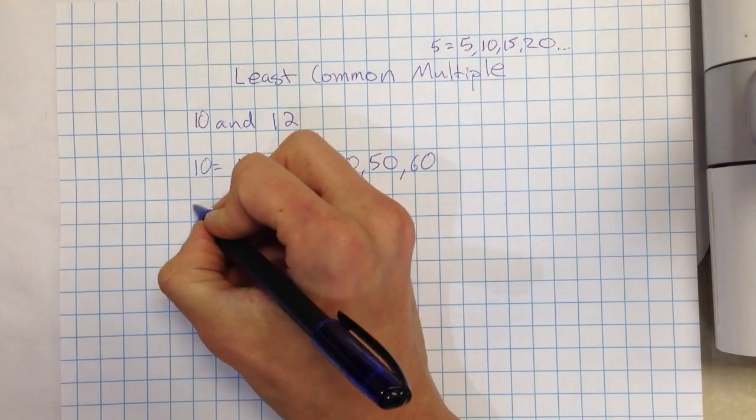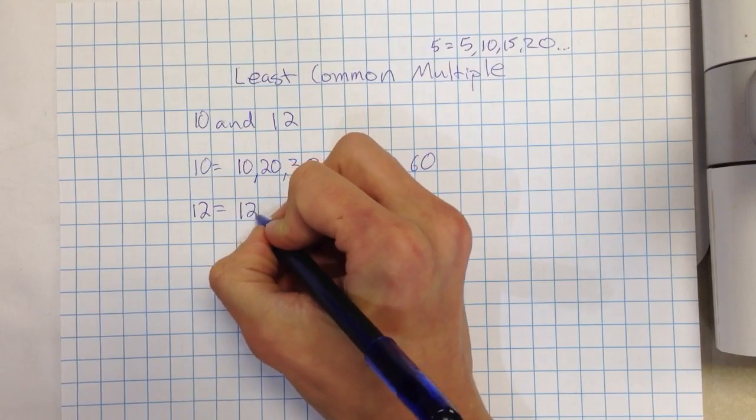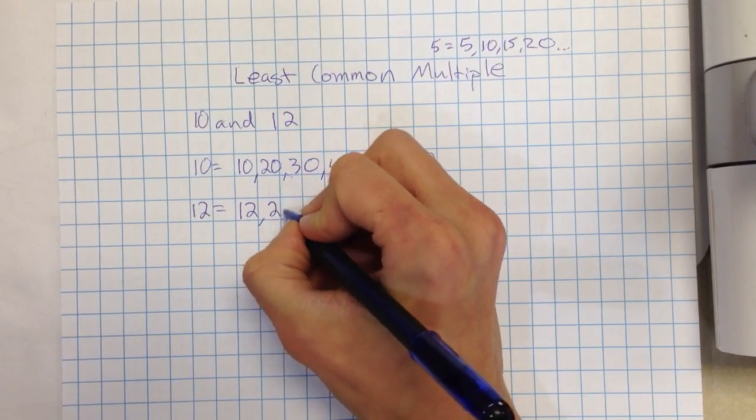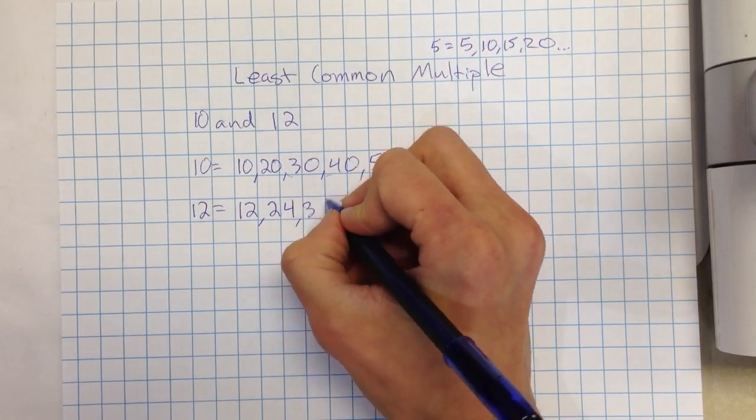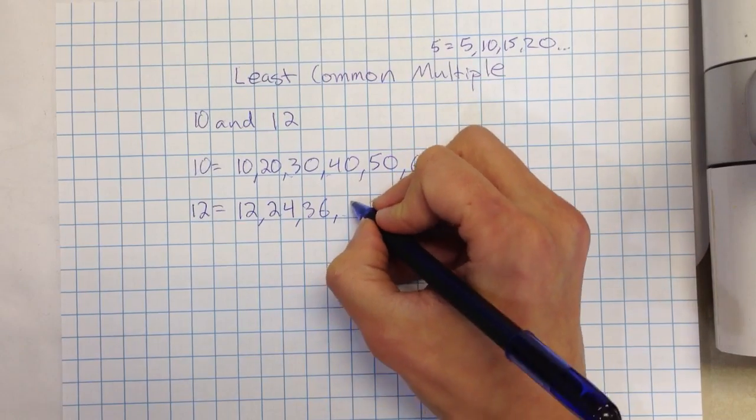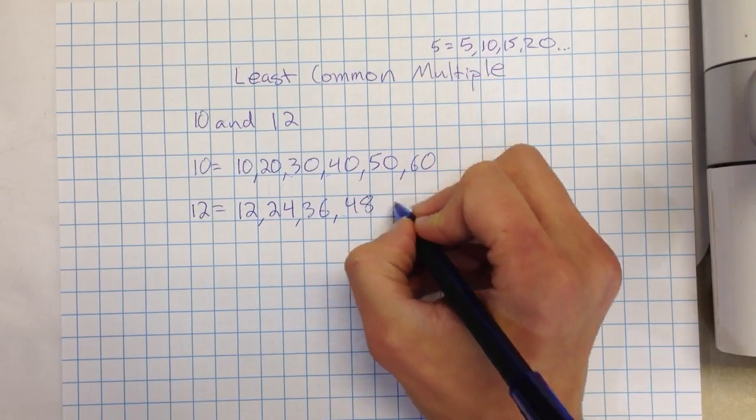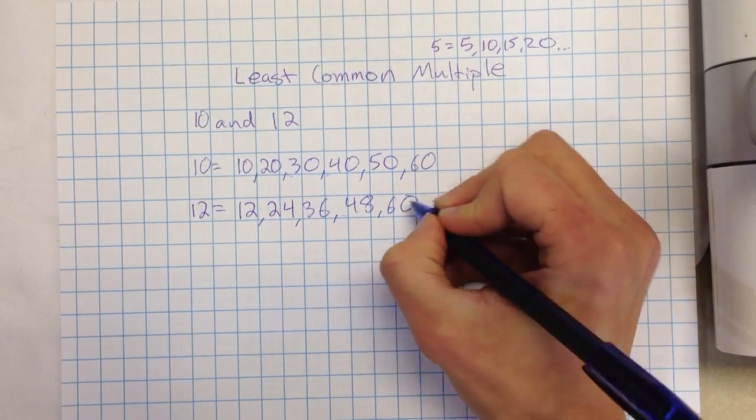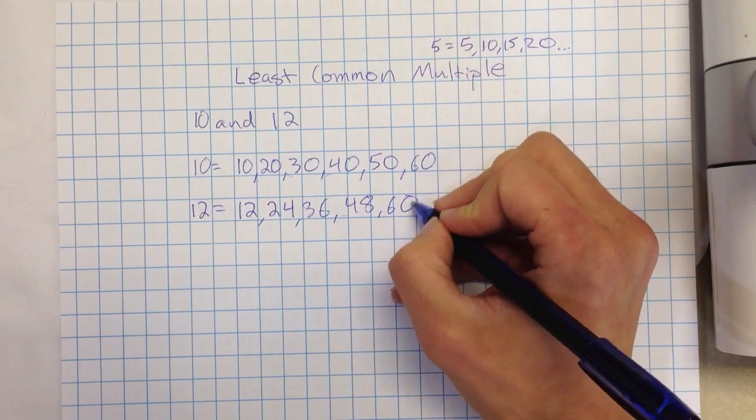And then I would write down twelve, and I would list some of the multiples of twelve. Twelve times one is twelve, times two is twenty-four, thirty-six, forty-eight, sixty. And I notice at this point I have something that they have in common.